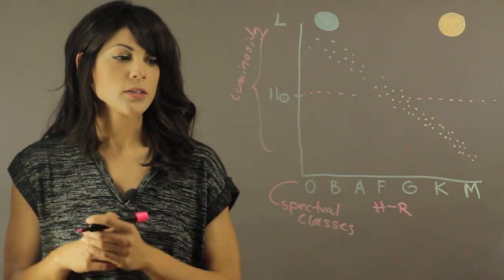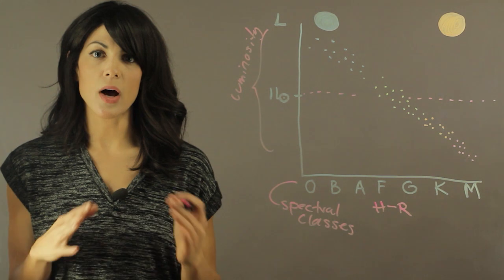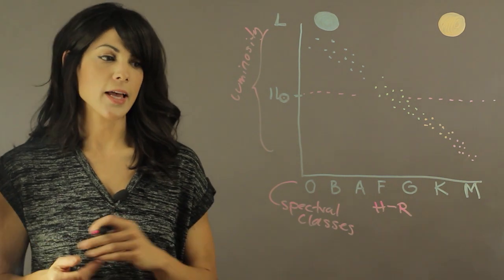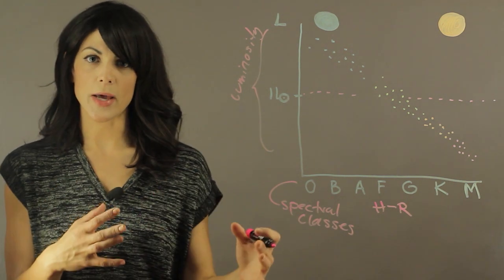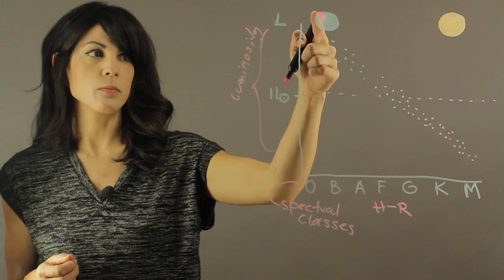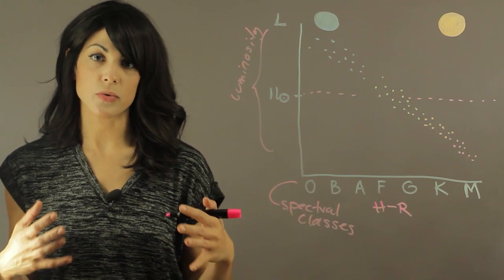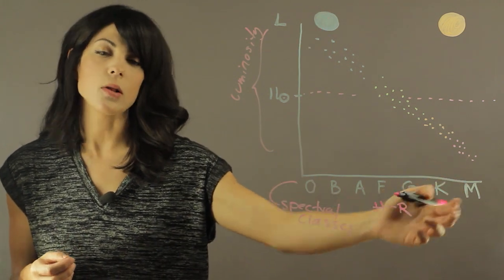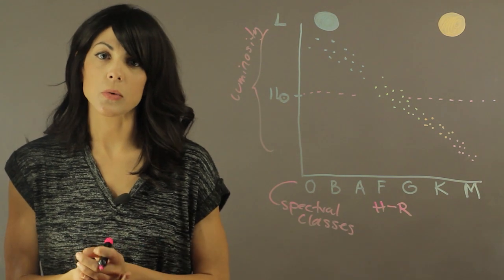So let's talk about the spectral classes. The spectral classes range from hot to very cold and from blue to red. So O belongs to the blue big stars, the really hot ones. And M belongs to the red stars, the colder ones.